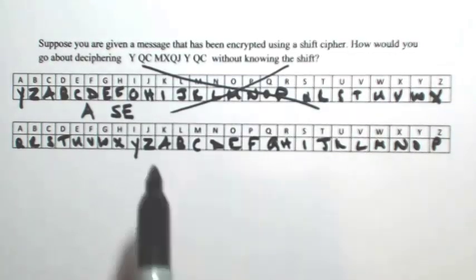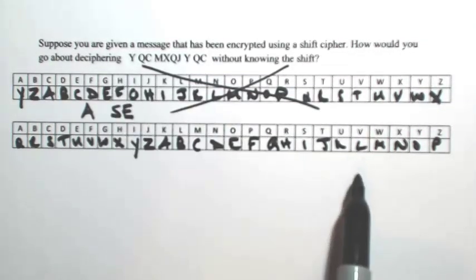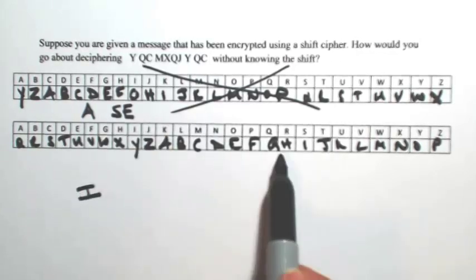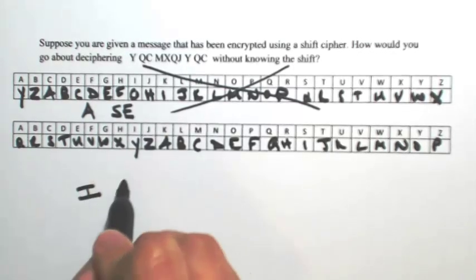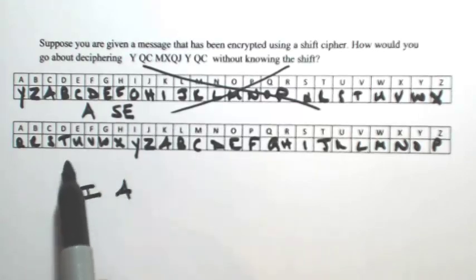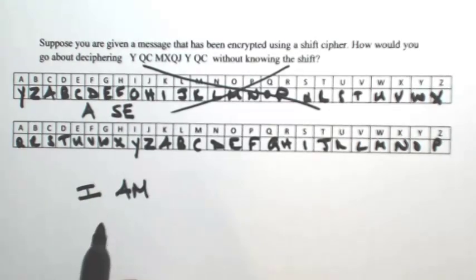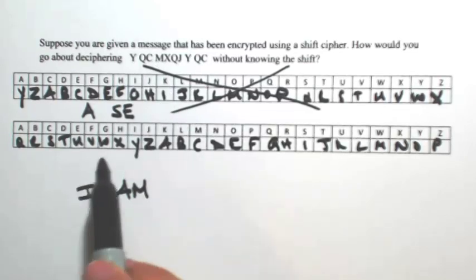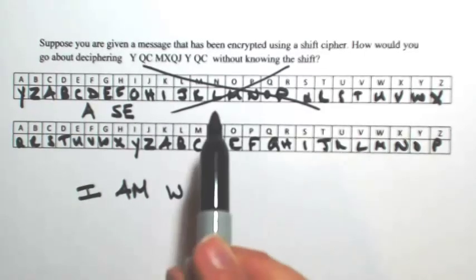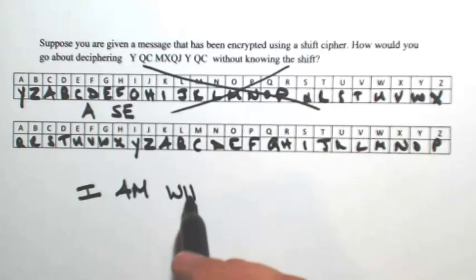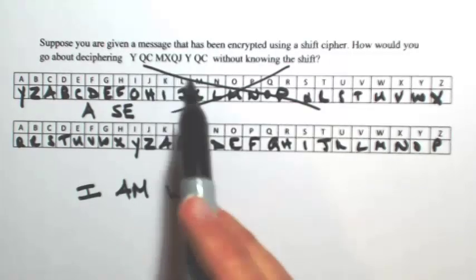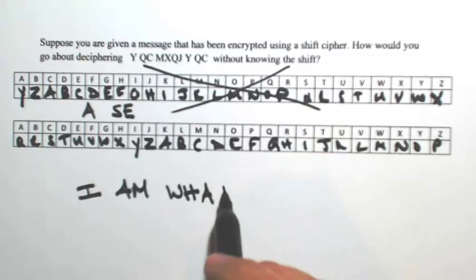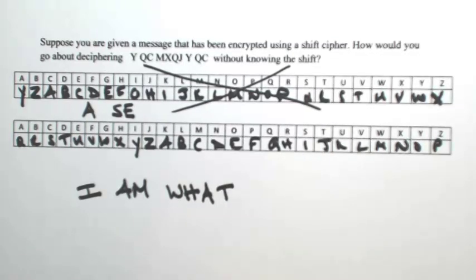Let's see if this one makes sense. So the Y was an I, the Q was an A, and the C was an M. 'I am' — M is a word, so I think this is on the right track. The M was a W, X was an H, Q was an A, and J was a T. 'At' is also a word, so I think we got it.